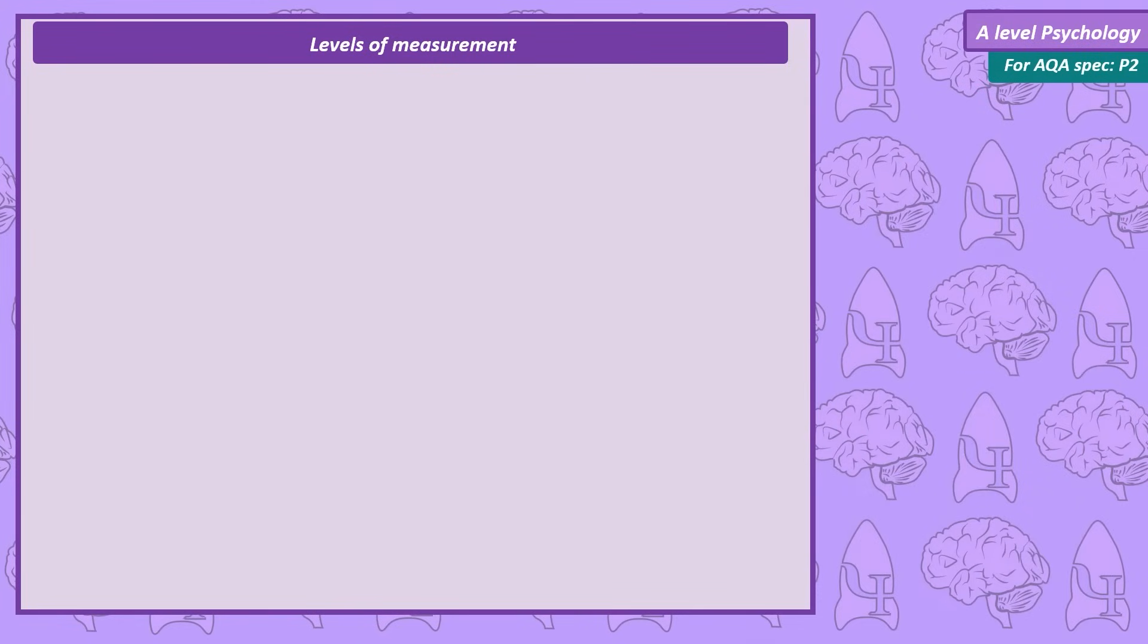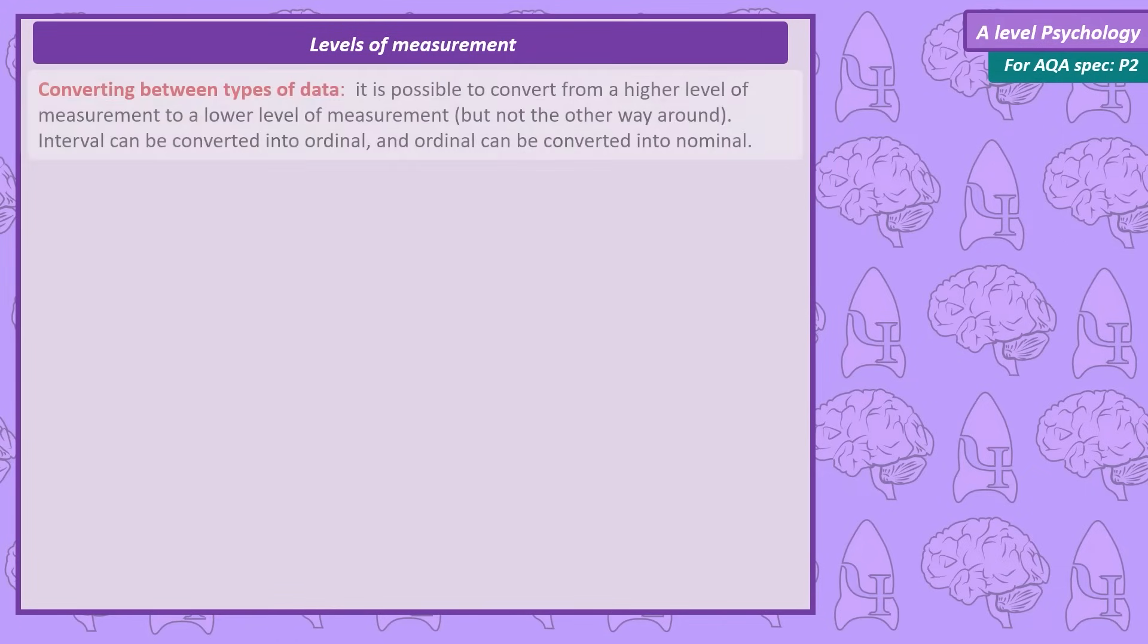While I was editing this video I realised that you might be asked to convert between different levels of measurement. Now it is possible to convert from a higher level of measurement down to a lower level of measurement but we can't do it the other way around. So for example interval can be converted into ordinal and ordinal can be converted into nominal.